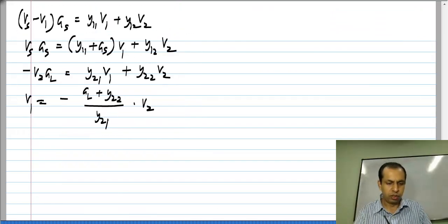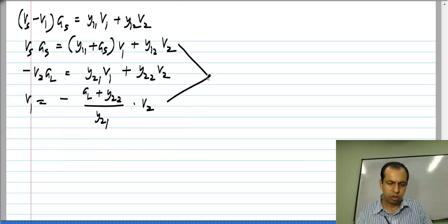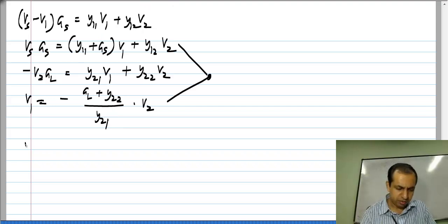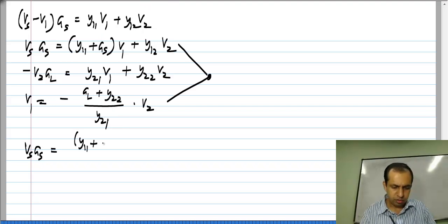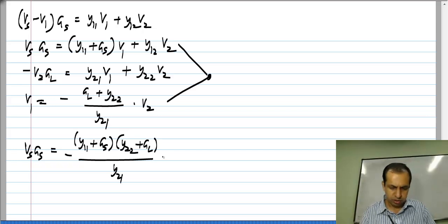So let me copy those over and from these two I need to eliminate V 1, so that I have a relationship between V s and V 2 and V 2 is nothing but V naught the output voltage that I am interested in. So putting this into that one I will get V s G s to be Y 1 1 plus G s Y 2 2 plus G l divided by Y 2 1 times V 2 plus Y 1 2 V 2.